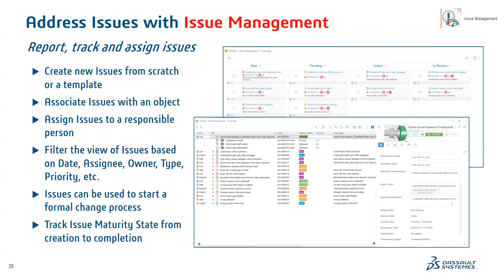A good tool for engineering change management is Issue Management. We have 3D Review and Issue Management inside the 3D Experience Platform. Issue Management is the advanced version, helping you report, track, and resolve issues. You can create new issues from scratch or from a template, and filter them by date, assignee, owner type, and more. This is one such application to manage your ECN process.